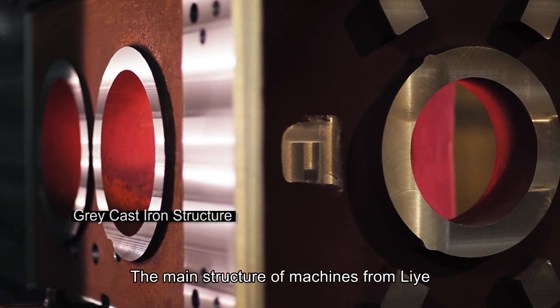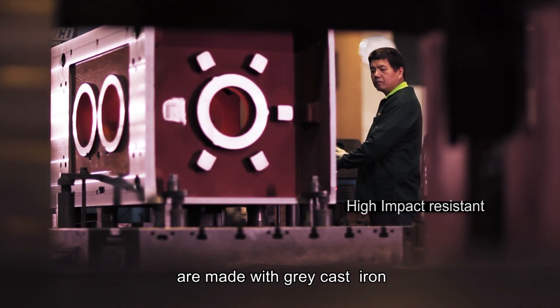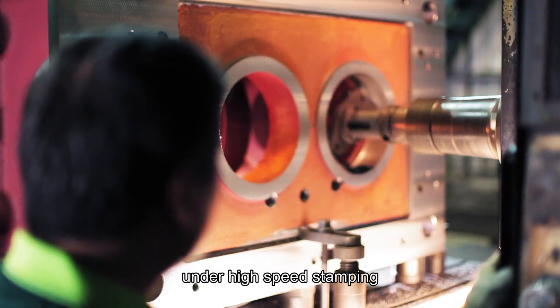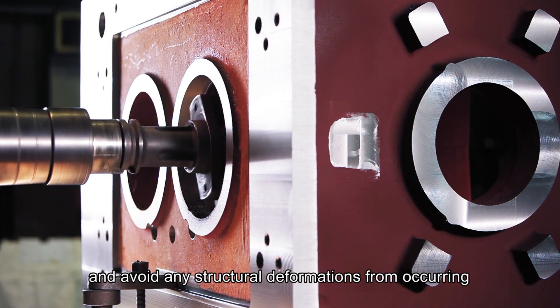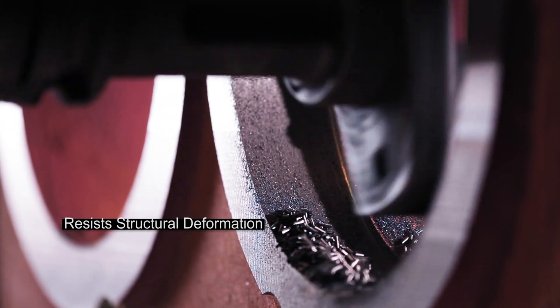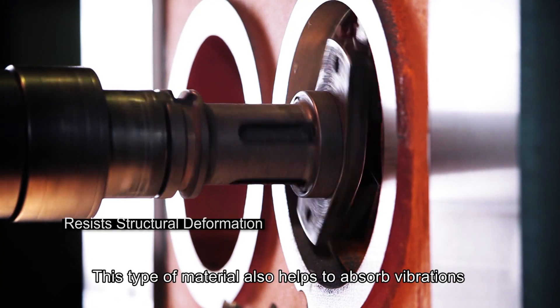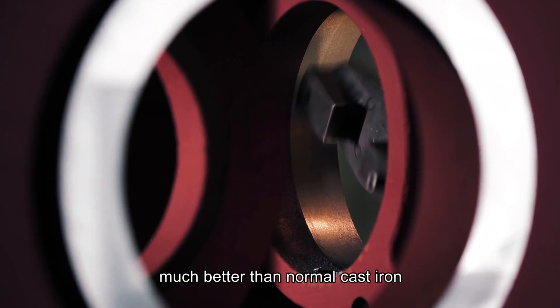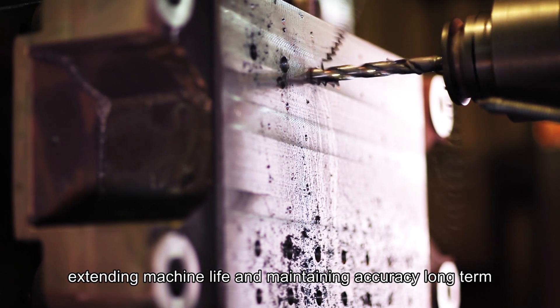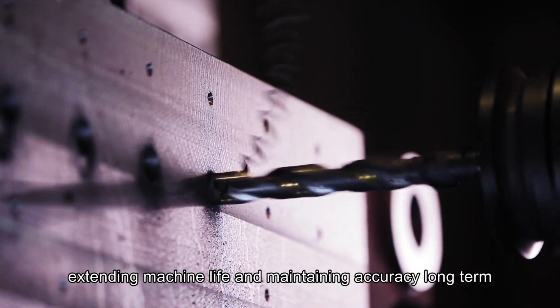Ductile graphite iron enhances resistance to impacts under high-speed stamping and avoids any structural deformations from occurring. This type of material also helps to absorb vibrations much better than normal cast iron, extending machine life and maintaining accuracy long-term.